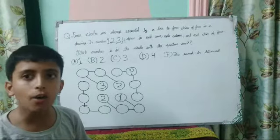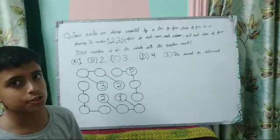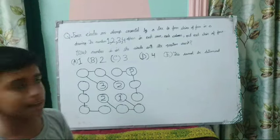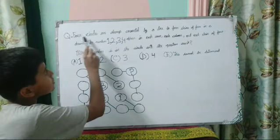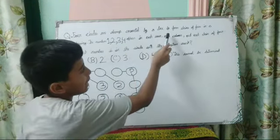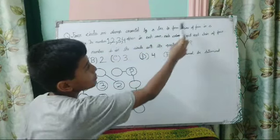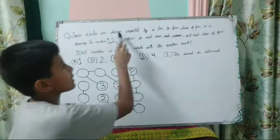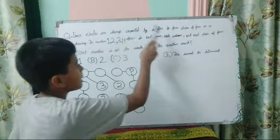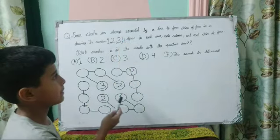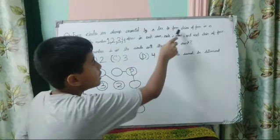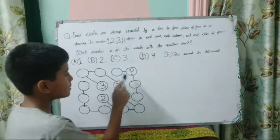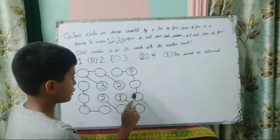Good evening everyone. Now we are going to solve this question. Let's first understand it. It is saying 4 circles are always connected by a line to form chains of 4 in a drawing. These are the circles of the drawing and they are always connected by a line. These lines connect them to form chains of 4.